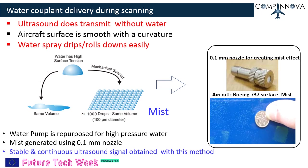This mist method was adopted here. A water pump was repurposed to deliver high-pressure water to a nozzle having 0.1 mm diameter. The mist generated is sprayed onto the surface, and it was found that a stable continuous ultrasound signal is obtained with this method.